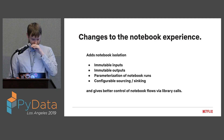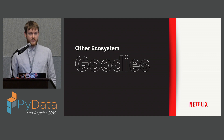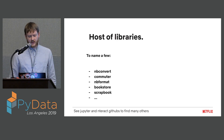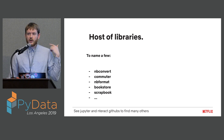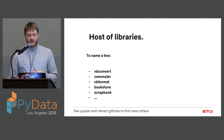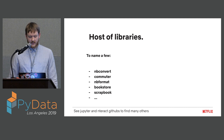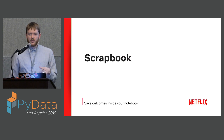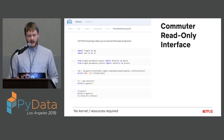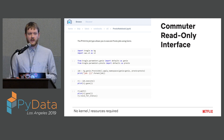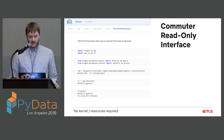We basically add notebook isolation with immutable inputs, immutable outputs, parameterization of notebook runs, and configurable sourcing and syncing. This gives much better control flow for notebooks as execution units for your ETL work, and we've had a lot of success with this. There are lots of other ecosystem tools: nbconvert is actually the engine that runs Papermill execution. Commuter is a read-only renderer. Bookstore is S3 persistence for your checkpoints when you're doing live development. I'm going to do a lightning talk later on Scrapbook, so I'll skip that and show it later. Commuter does need some love — the two companies using it heavily have branched away from the open source one, so it needs someone to come help update it.